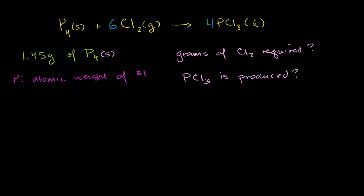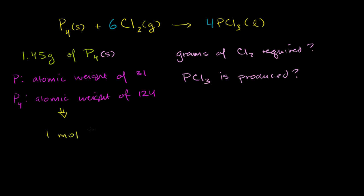Now if you look at the atomic weight of P₄, a molecule that has four phosphorus atoms in it, it's going to be four times 31, so it's going to have an atomic weight of 124. This tells us that one mole of solid molecular phosphorus is going to have a molar mass of 124 grams per mole. We can use that to figure out how many moles of molecular phosphorus we have.